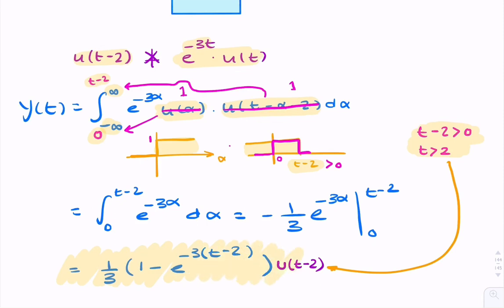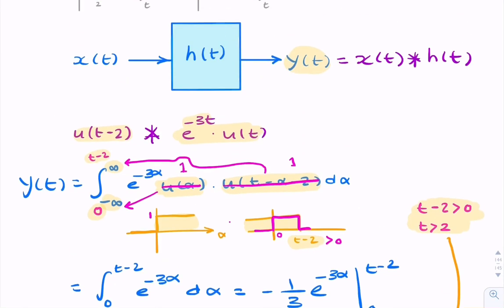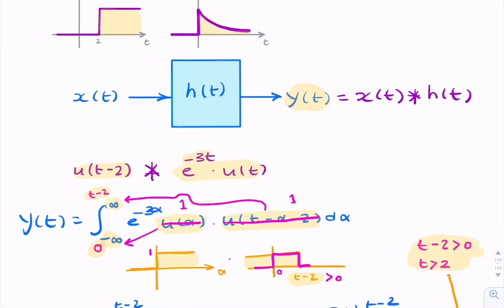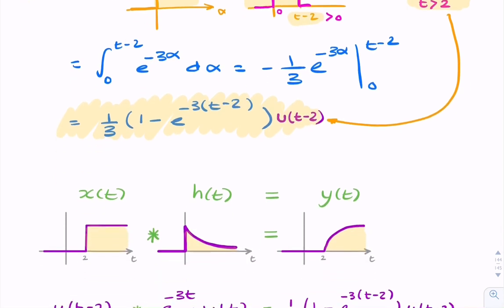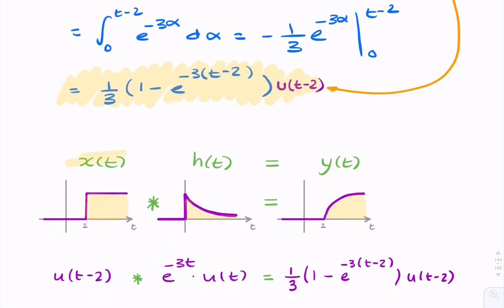This is the output of a system where the input was a unit step delayed by 2 seconds, and the impulse response was a decaying exponential. We found this by carrying out a convolution integral. And if we want to look at what the output might look like, so this is my input, this is my impulse response, this is my output.